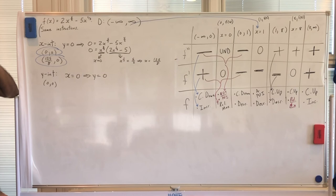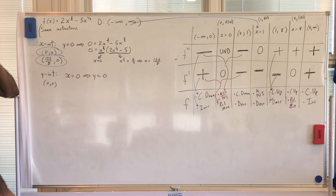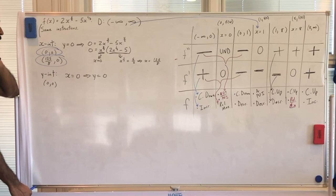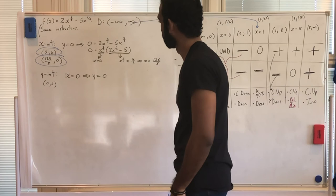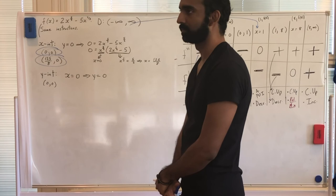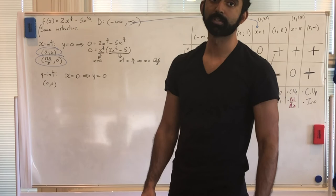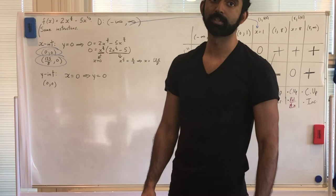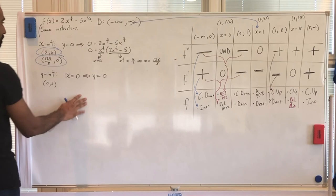No vertical asymptotes — the function is defined and continuous everywhere. No horizontal asymptotes either, since as x → ±∞ the function grows without bound. Generally, if there are no fractions involving variables in the denominator, you don't need to worry about asymptotes.